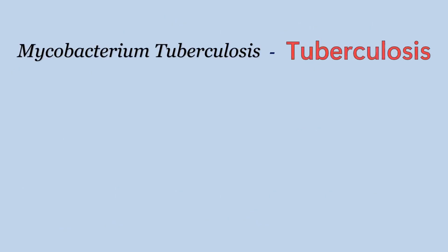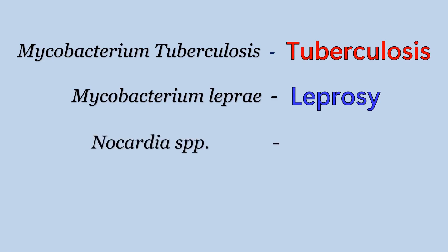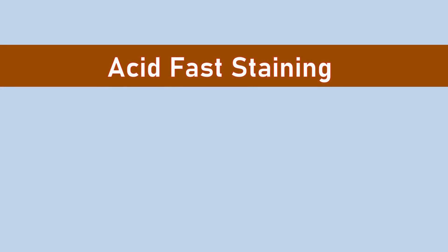Mycobacterium tuberculosis, which causes tuberculosis; Mycobacterium leprae, which causes leprosy; and many Nocardia species, which cause the disease nocardiasis, are examples of acid-fast bacteria. All these bacteria are stained using acid-fast staining.